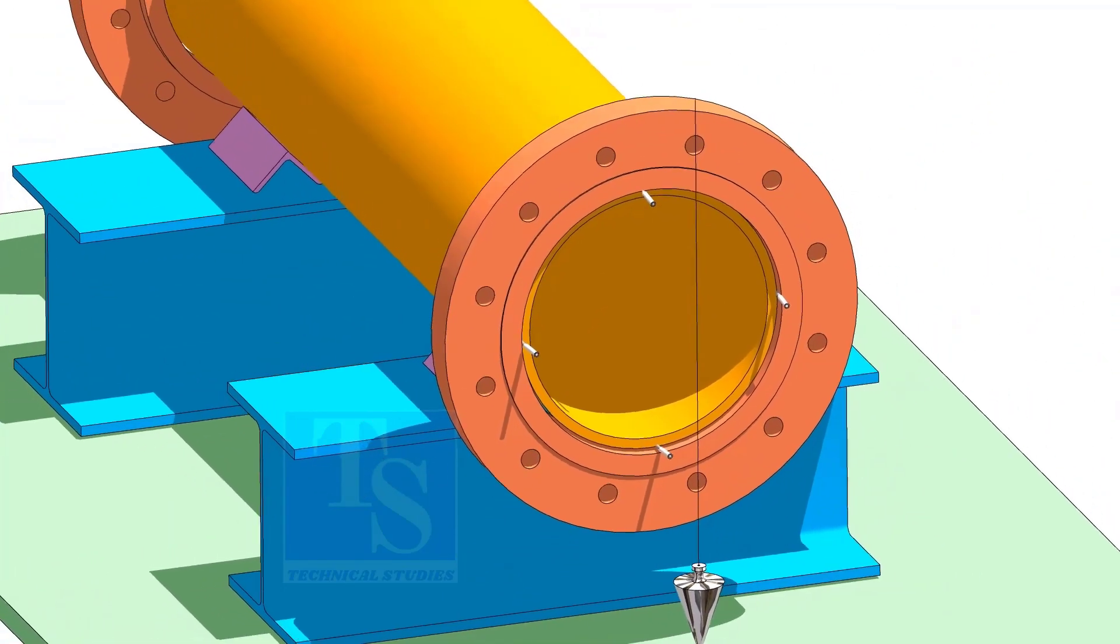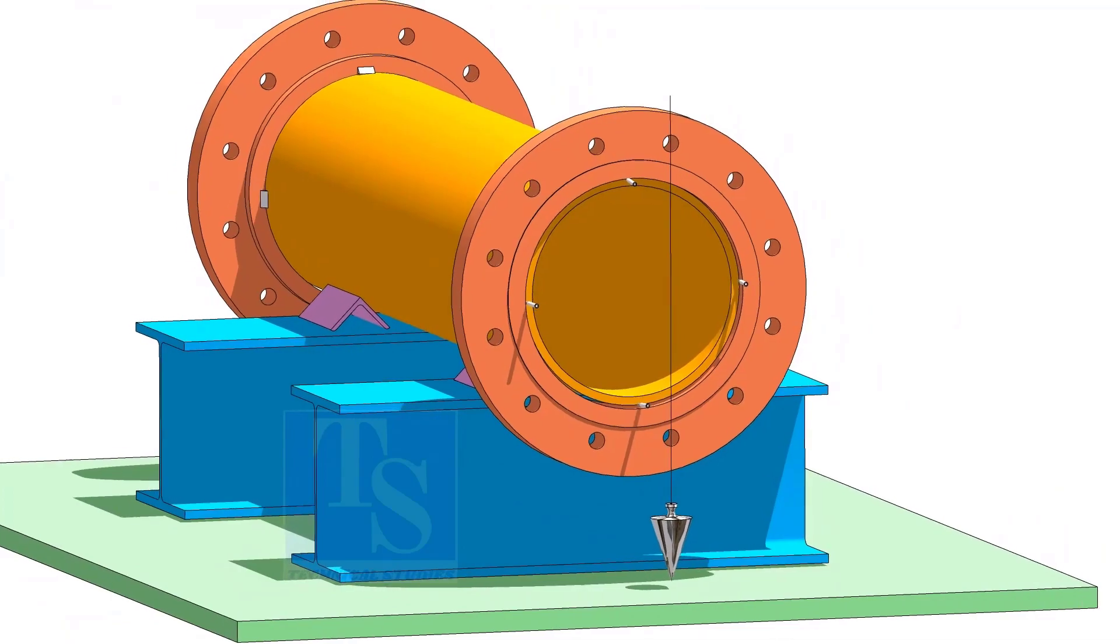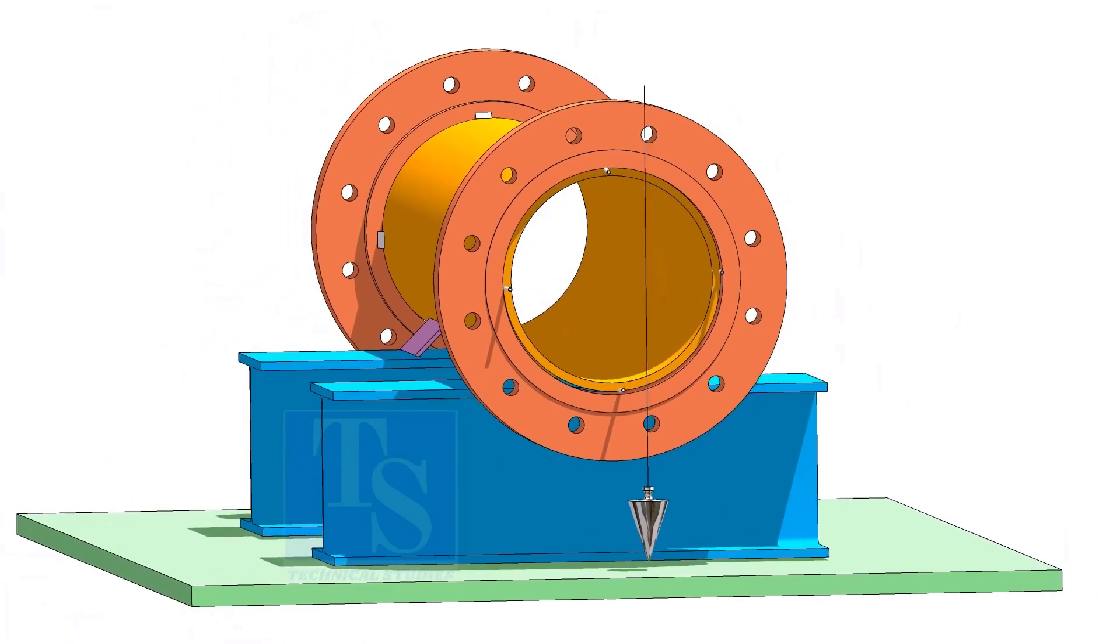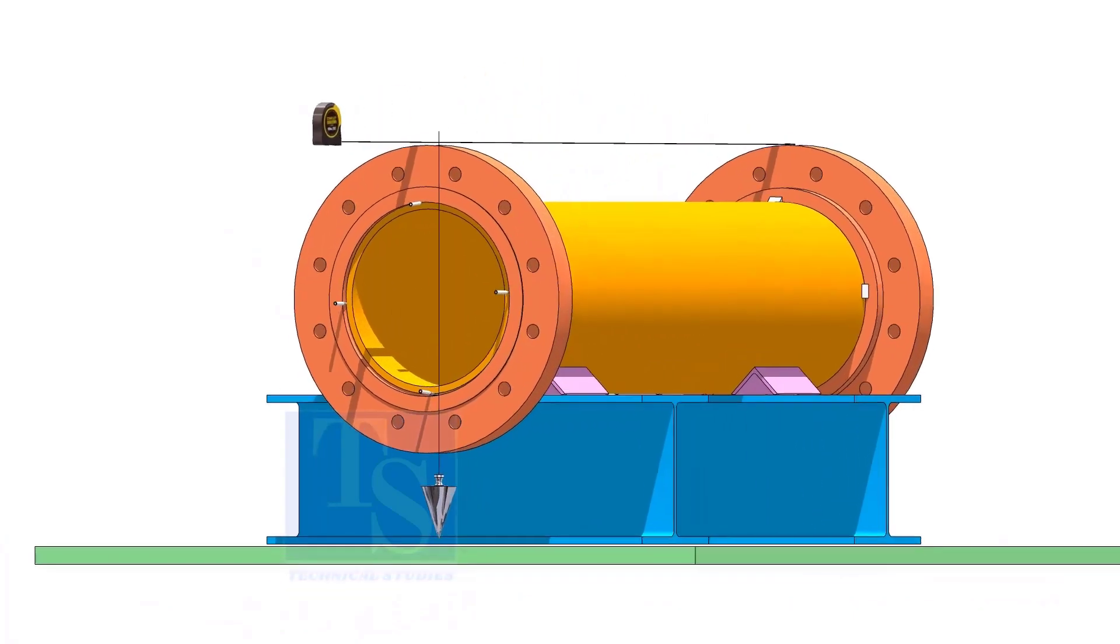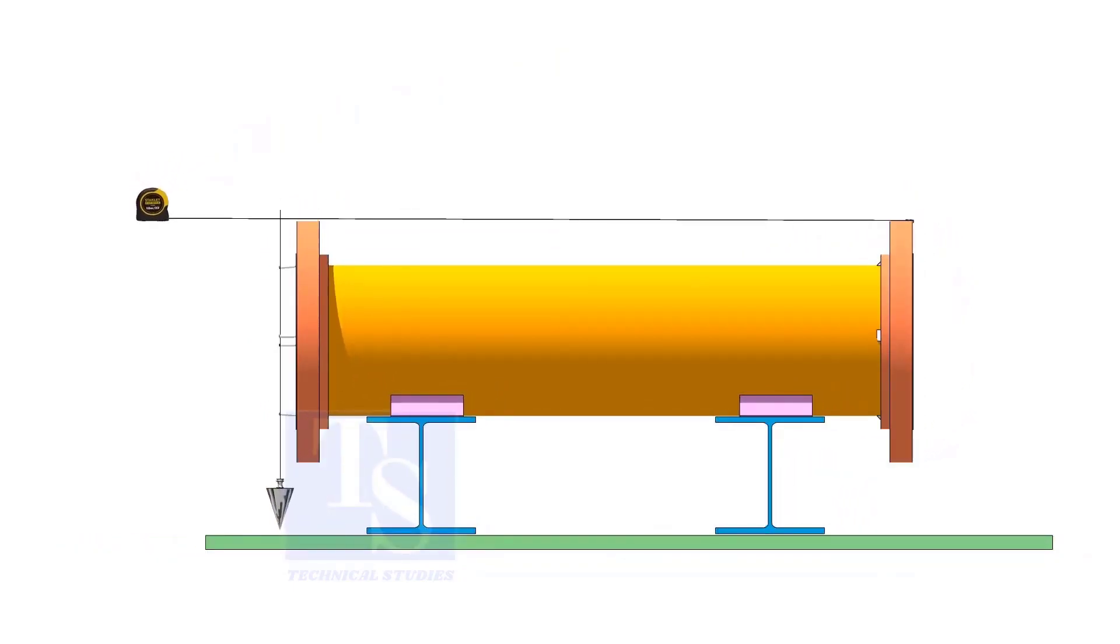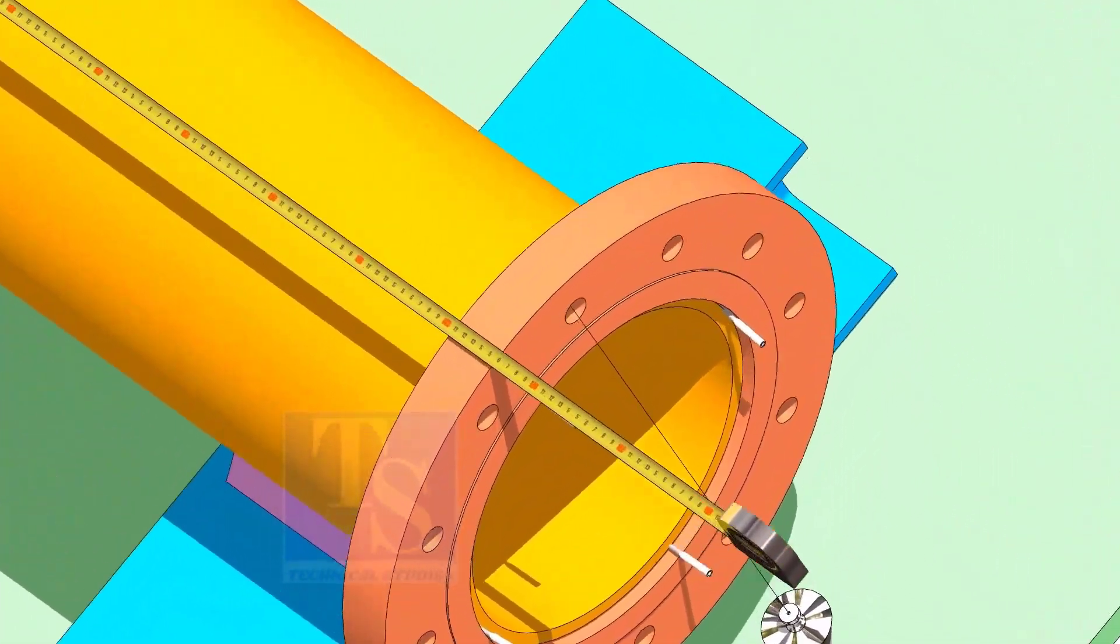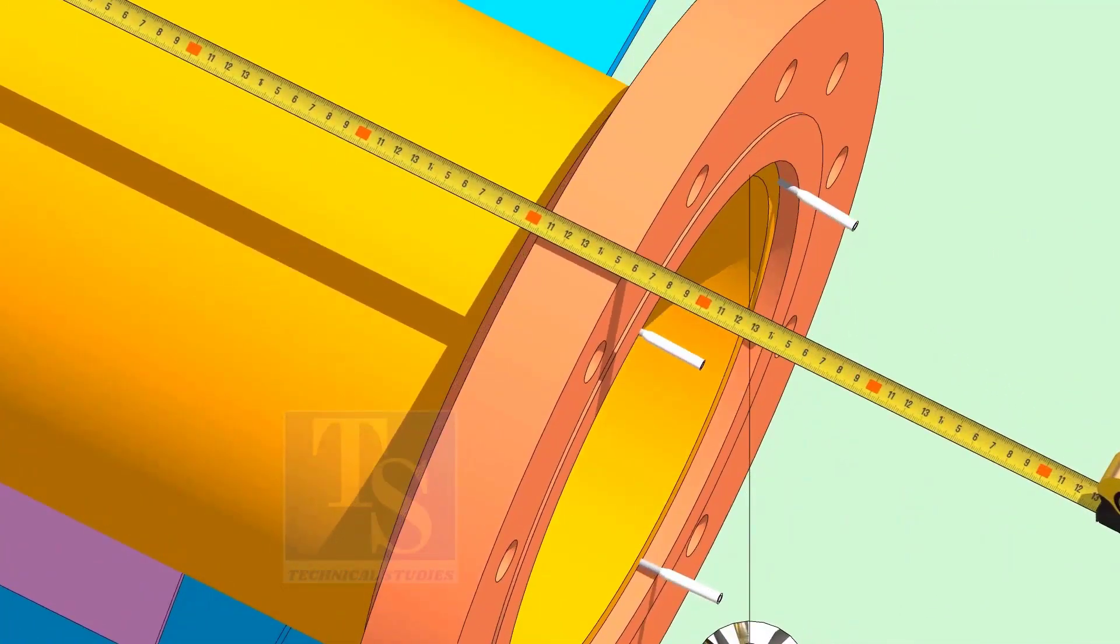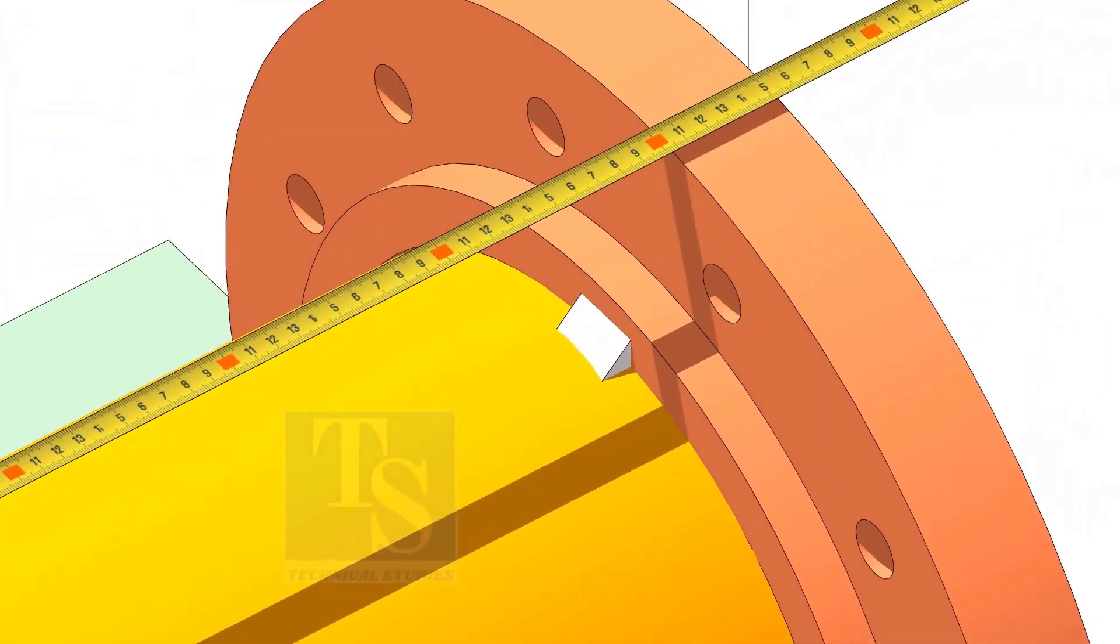Correct the plumbness. Now, make sure the length of the pipe spool is as per the drawing. Tack weld on the top side and repeat the steps we have done on the first flange.